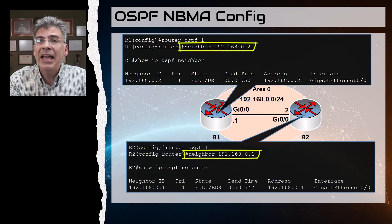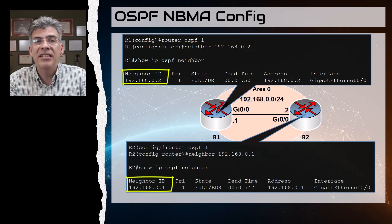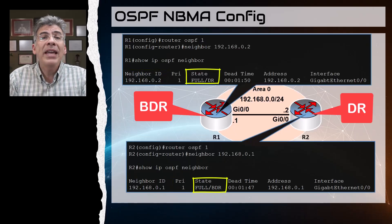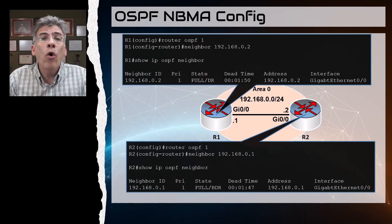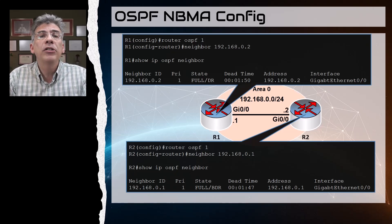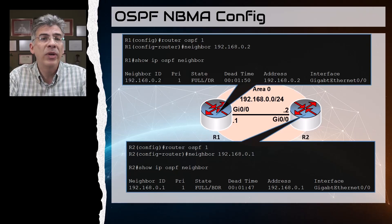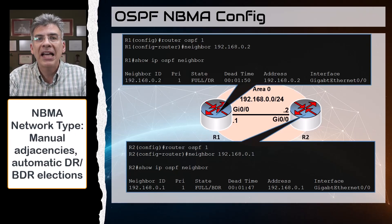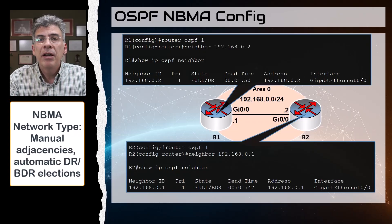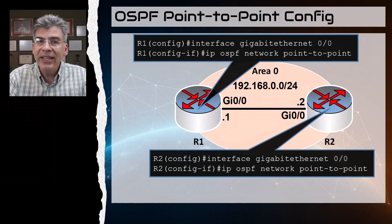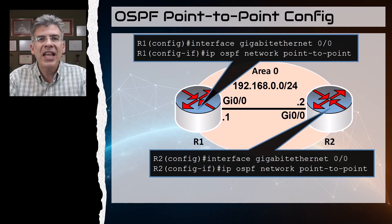Once that's done, the routers begin exchanging hellos using unicast addresses — those of the configured neighbor commands. The result is a neighbor adjacency as well as a successful DR/BDR election. So if you had a DMVPN topology or an implementation of MPLS layer 2 VPNs where multicast isn't available by default, OSPF wouldn't work — but you could configure the interfaces using these commands and routers would successfully operate OSPF between them. That's NBMA: manual configuration of neighbors, but the rest OSPF does on its own.